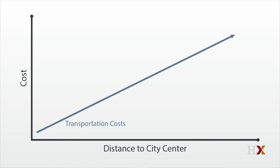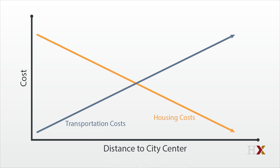Transportation costs rise linearly with distance to the city. What's going to happen to the cost of housing? The spatial equilibrium concept means that housing costs must fall to exactly offset these transportation costs. So we can draw a declining line for housing costs that is exactly the opposite slope of transport. You add them together, you get a fixed total cost of living in the city that is exactly equal to the cost of housing at the center, where you don't need to commute at all.